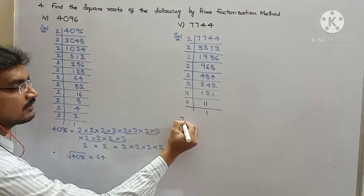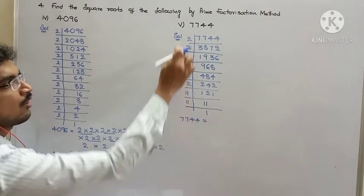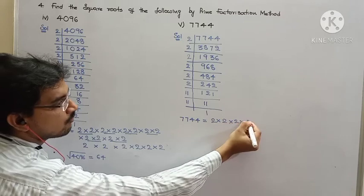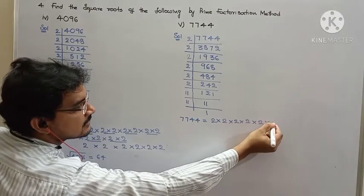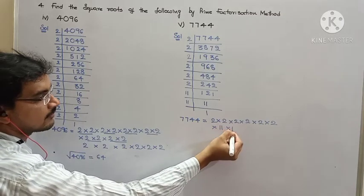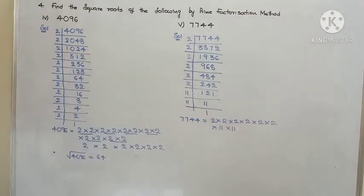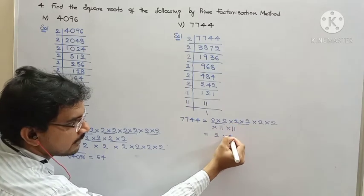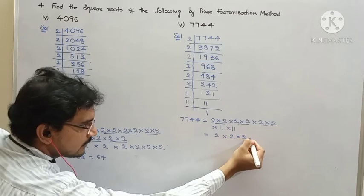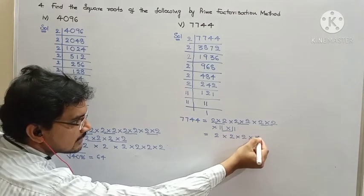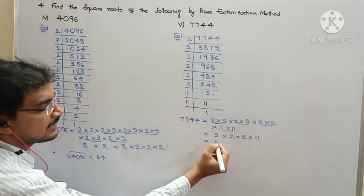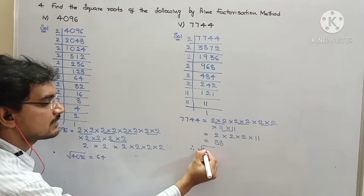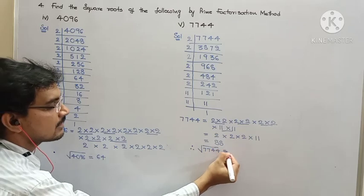So, now, how we can write this 7744 as prime factors? 1, 2, 3, 4, 5, 6 twos, and 11 and 11. Just like we are doing. From this pair, we are going to take 1, 2. And, from this pair, we are going to take 1, 2. And, from this pair, we are going to take 2. And, from this 11. 2 times 2 is 4. 4 times 2 is 8. 8 times 11 is 88. Therefore, square root of 7744 equals 88.